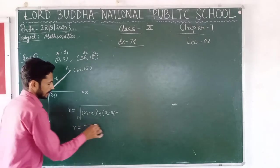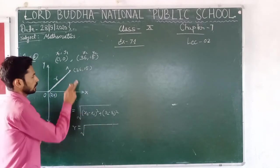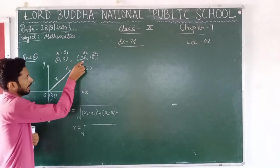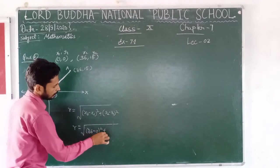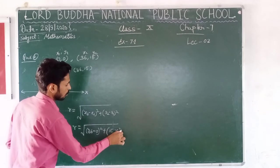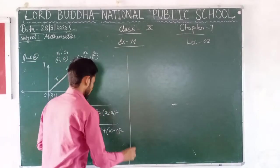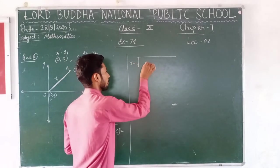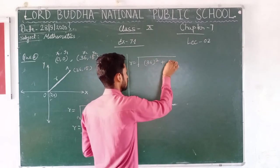Now put the values of x1, y1, x2, and y2. Here x2 is 36 and x1 is 0, whole square, plus y2 which is 15, minus y1 which is 0, whole square. So r equals to square root of 36 squared plus 15 squared.